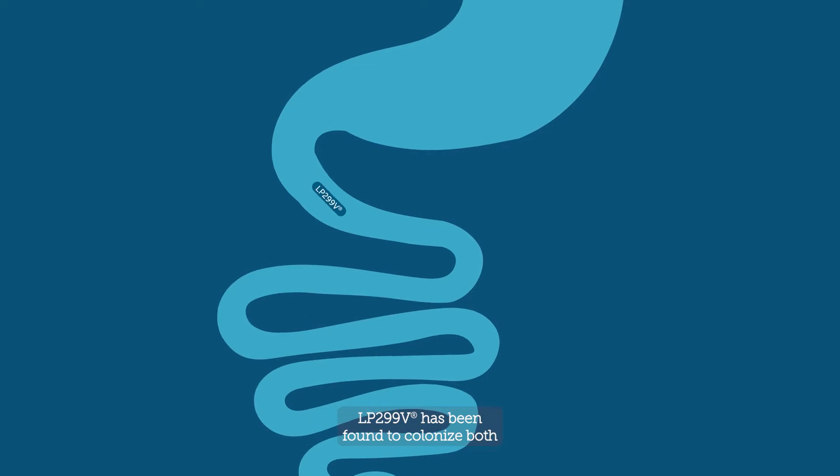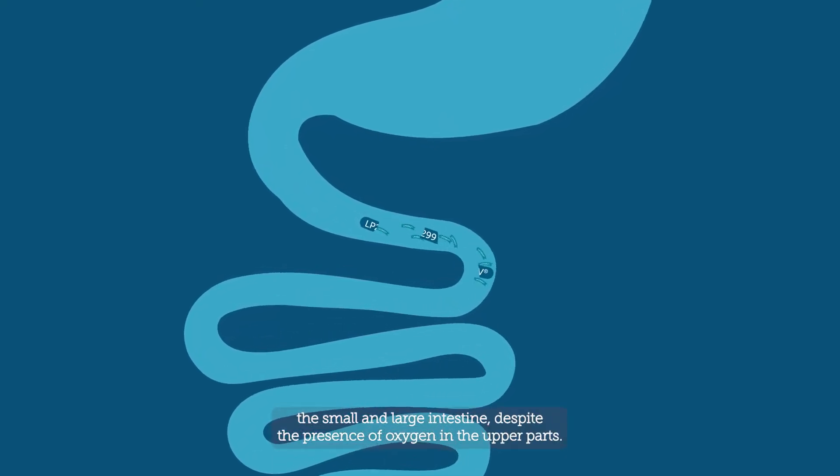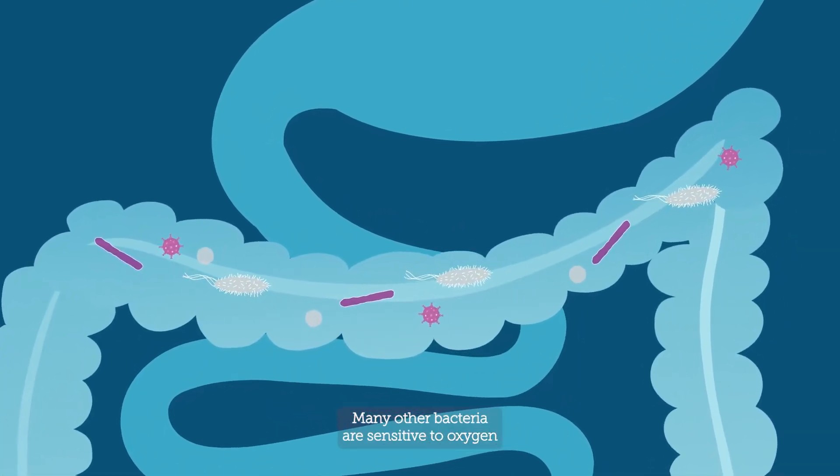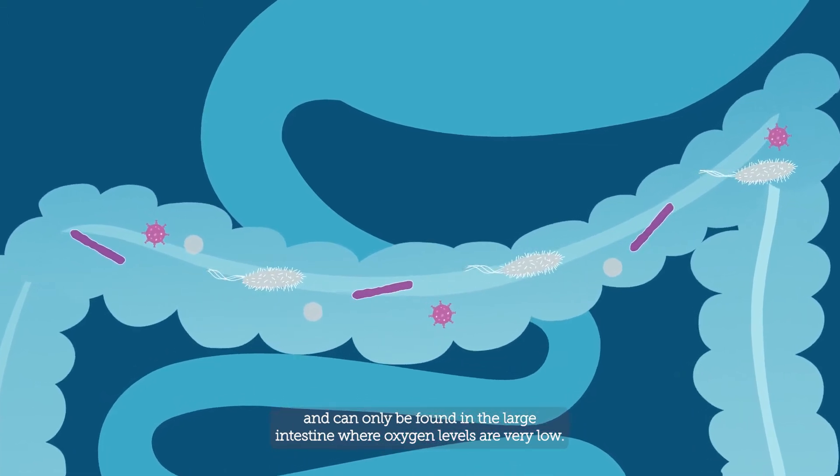LP299V has been found to colonize both the small and large intestine, despite the presence of oxygen in the upper parts. Many other bacteria are sensitive to oxygen and can only be found in the large intestine where oxygen levels are very low.